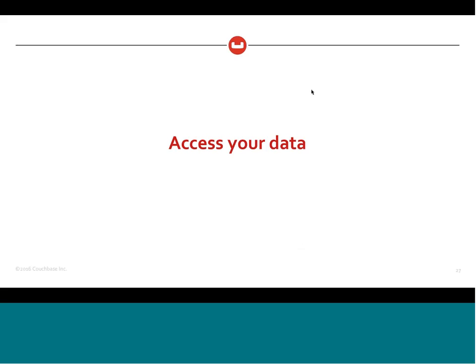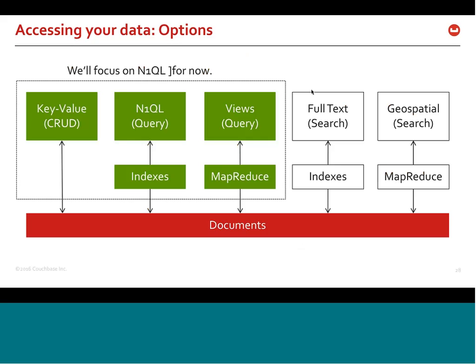Once you've modeled your data, the next question is how do you access it? In Couchbase and most other NoSQL products, there are different ways. You can access data via a key-value pair API for CRUD operations — create, retrieve, update, and delete. There's a query interface for views. But the one we'll focus on today is N1QL, the general query interface that lets you access data through indexes.